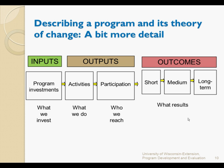Start with the long-term outcome — what is the impact that you want your program to have? Let's say we want to reduce neonatal mortality. Our next step would be to identify what is the medium-term outcome that would need to happen in order for neonatal mortality to be reduced.